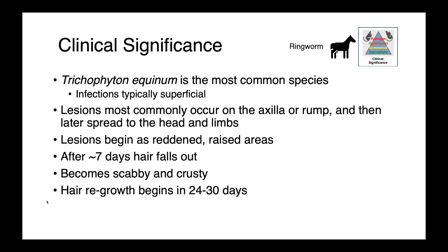The lesions begin as a reddened, raised area, and after about a week the hair falls out, so we're seeing alopecia. The lesions become crusty and scabby, and hair regrowth starts around three to four weeks following the initial presentation.